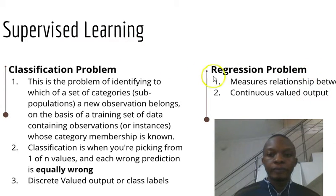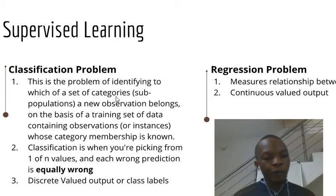You have two main dichotomies. The first is classification: the problem of identifying to which of a set of categories or subpopulations a new observation belongs, on the basis of a training set of data containing observations or instances whose category membership is known.